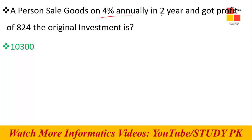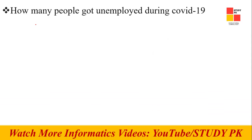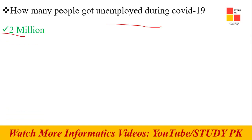Next: a person's savings grow at four percent annually over two years with a profit of 820 — the question is incomplete but an answer was given. Next: find the multiplier given MPC of 0.8 — the answer is five. Next: how many people got unemployed during COVID-19? The question is incomplete but the answer was around two million.